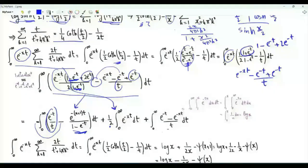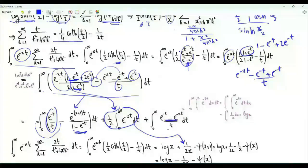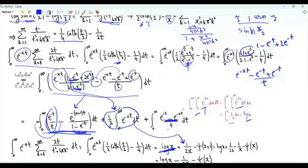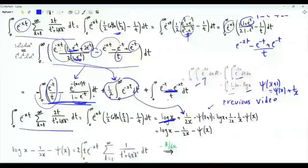Splitting into three integrals: the first gives 1/(2x). The term e^{-t} - e^{-xt} can be written as the integral over u from 1 to x of e^{-tu}, and since the integrand is non-negative we can exchange the order of integration. Integrating first with respect to t gives 1/u, and the double integral becomes integral from 1 to x of 1/u, which is log(x). Using the Gauss integral representation, this integral equals digamma(x+1) equals digamma(x) + 1/x. This gives log(x) minus 1/(2x) minus digamma(x).